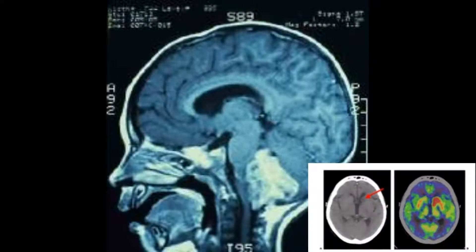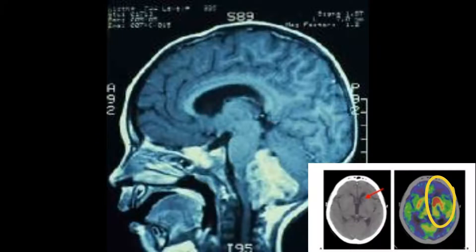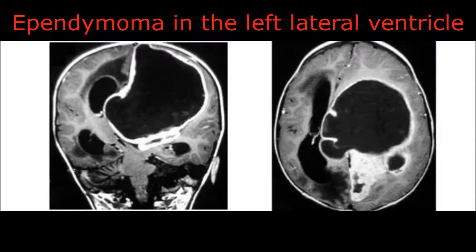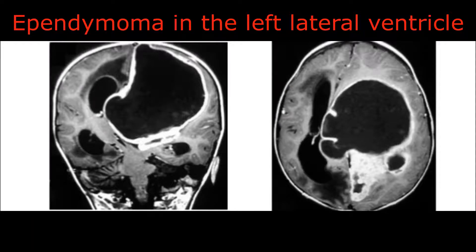X-rays and nuclear medicine can also be used. Here you can see an ependymoma in the fourth ventricle (infratentorial), and here an ependymoma in the left lateral ventricle. This is a contrast-enhanced T1 weighted image, which is preferred over a T2 weighted image. Here you can see a mass effect — when the growing tumour, in this case ependymoma, is obstructing the ventricular system, causing increased intracranial pressure. Any mass in the brain — whether haemorrhage, haematoma, or tumour — can cause a mass effect.